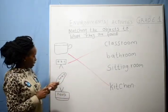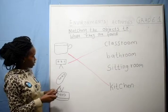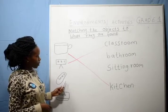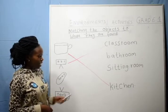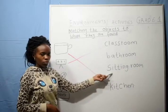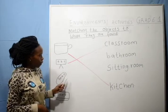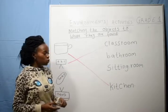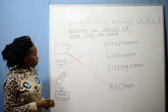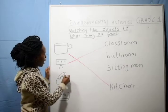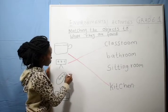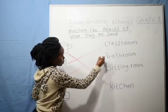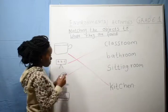We go to our next object. This one is soap. Do we find soap in the sitting room? No. Do we get soap in the bathroom? Very good. We get soap mostly in the bathroom.